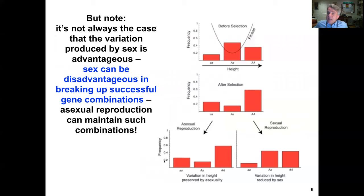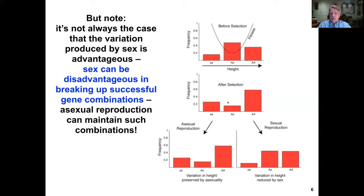Another disadvantage of sexual reproduction is that recombination can disrupt favorable genotypes. Consider a disruptive selection scenario where the modal genotype is selected against — the heterozygote is at a disadvantage and the homozygous genotypes have greater fitness. With asexual reproduction, we maintain these favorable genotypic combinations, whereas with sexual reproduction we're consistently recombining genotypes, disrupting the favorable ones.